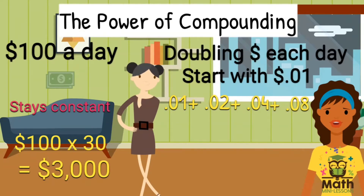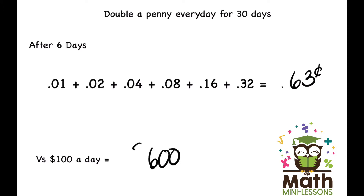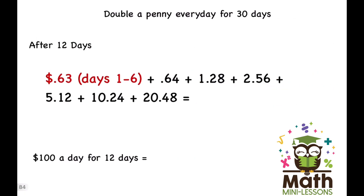To get to 30 days we have to keep doubling, and to get the total I have to add every number from the day before — I need my notebook for this. The first six days are easy: all I'm doing is doubling each day. But at the end of six days, adding everything up, I only have 63 cents versus $600 for $100 a day.